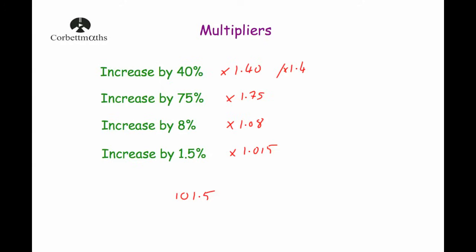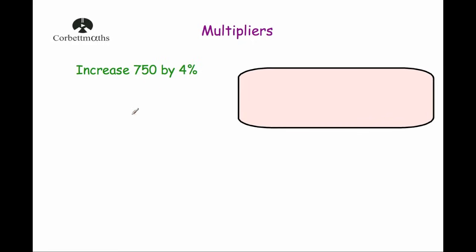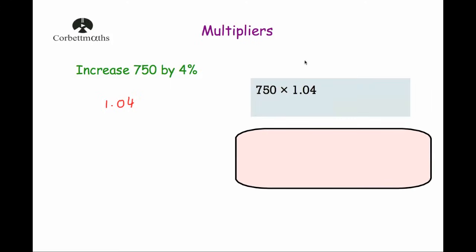So let's have a look at a question. Our question says increase 750 by 4%. If we add 100% and increase by 4%, that would be 104%, so the multiplier is 1.04. We just need to multiply 750 by 1.04. When we do 750 multiplied by 1.04, we get an answer of 780. So increasing 750 by 4% gives us 780.